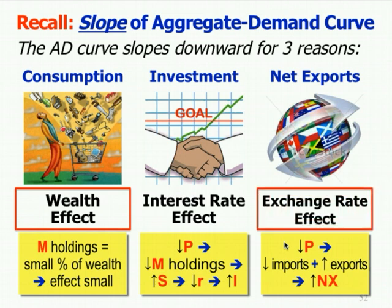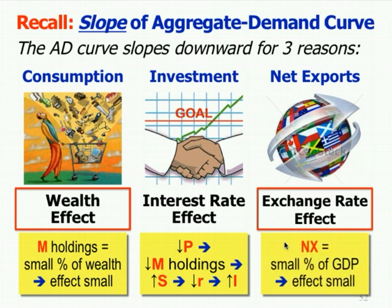The exchange rate effect: lower prices mean American stuff is cheaper, so we export more, people buy more American goods and less foreign goods — lower imports, higher exports, an increase in net exports. But net exports are only about 2.7% of GDP, so this effect is also not having a big effect on the downward sloping aggregate demand curve.